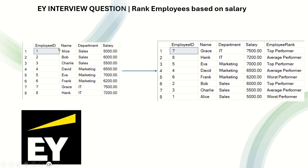In the table employees you have four columns: employee id, name, department, and salary. You have to add another column in the output called employee rank, and those values should be either top performer, average performer, or worst performer. The logic is: if the employee's salary is the highest in his or her department, they are top performer. If the difference between the employee's salary and the department's highest salary is less than 10 percent, they are average performer. If the difference is greater than 10 percent, they are worst performer.